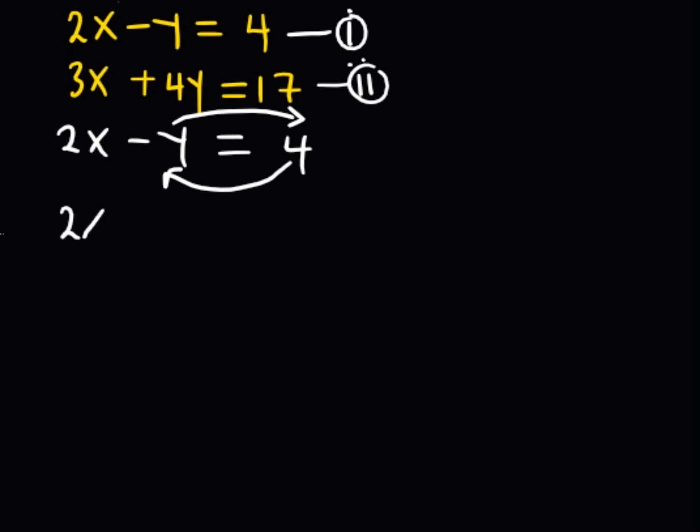What does that mean? I'm going to have 2x, this 4 is positive, when it crosses the equal signs, it is going to become negative. And this y is negative, when it crosses the equal signs, it is going to be positive.